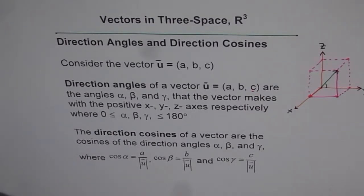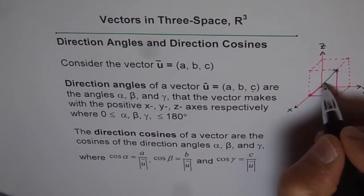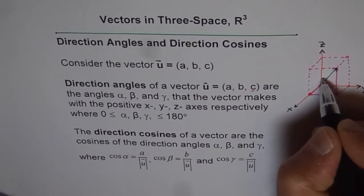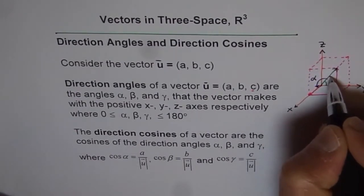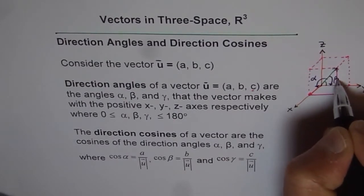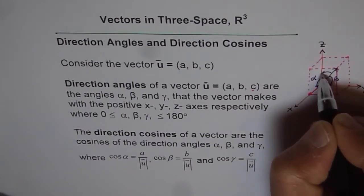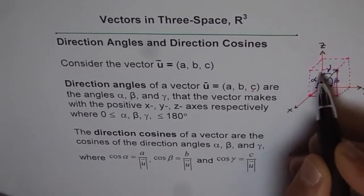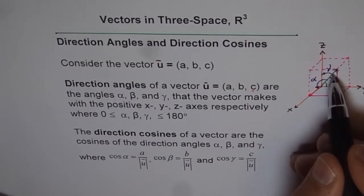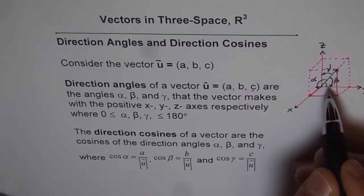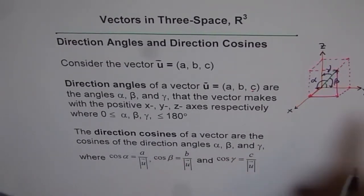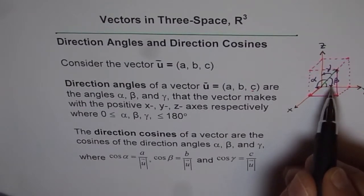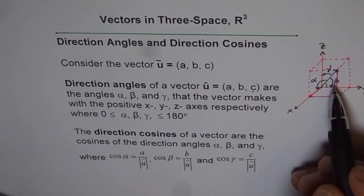When we give directions to this vector, we refer to its angle with each axis. The angle the vector makes with X we call alpha, with Y we call beta, and with Z we call gamma. These three angles are the direction angles for our given vector. The direction cosines are the cosines of these angles — cos alpha, cos beta, and cos gamma.